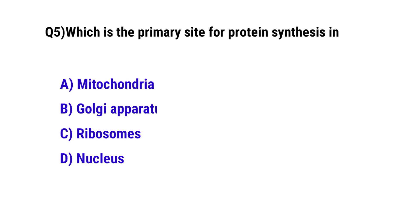Question number 5. Which is the primary site for protein synthesis in the cell? The correct option is C: Ribosomes.